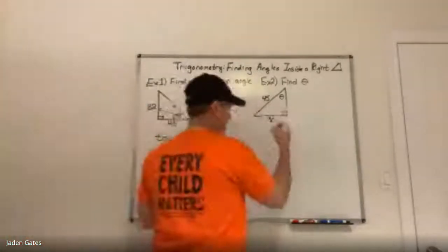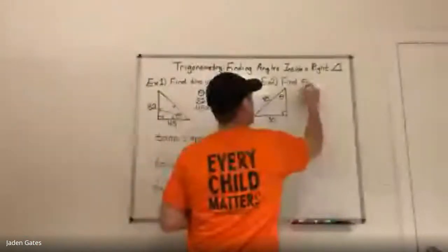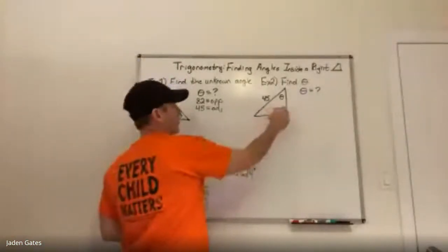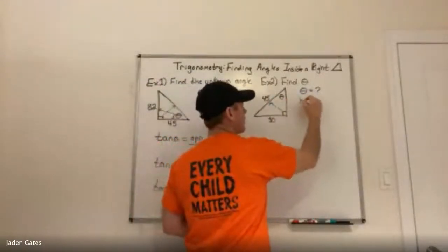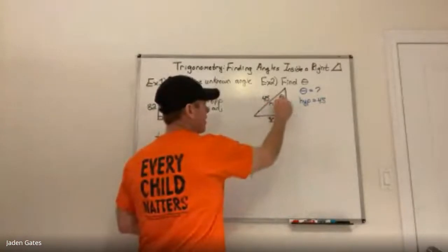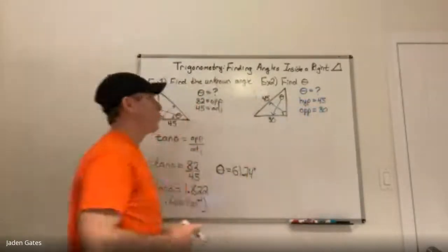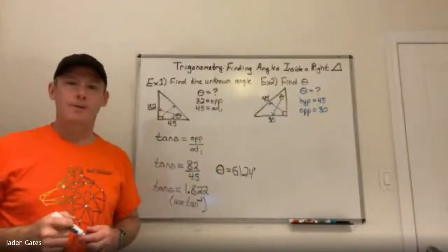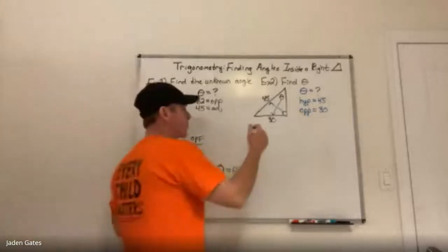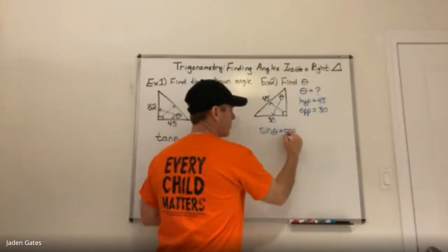Example two: find theta again. We have sides 30 and 45. First, I identify the sides — across from the right angle is the hypotenuse, so 45 is my hypotenuse. Then looking at theta, the side across from it is the opposite, so 30 is the opposite. I have the hypotenuse and the opposite, so I use the sine ratio: sine of theta equals opposite divided by hypotenuse.